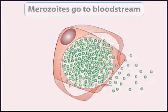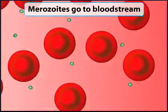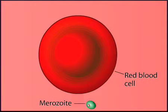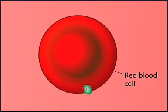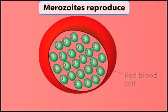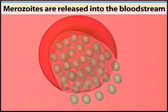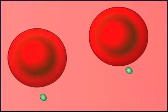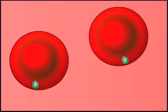About a week later, the merozoites burst out of liver cells and enter the bloodstream. In the bloodstream, the merozoites infect red blood cells, where they again reproduce and burst out of the infected cells. The resulting merozoites can infect other red blood cells, yielding a cycle of infection and eruption. Malaria is characterized by repeated bouts of fever, each of which correlates with the synchronous release of merozoites from a population of red blood cells.